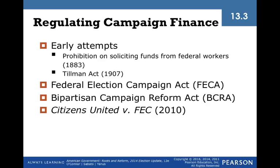Early attempts to regulate campaign finance included a prohibition on soliciting funds from federal workers, passed in 1883 as part of civil service reforms in the Pendleton Act, and then the Tillman Act of 1907, which prohibited corporations from making direct contributions to candidates for federal office. The first serious legislation came in the 1970s. In 1974, the Federal Election Campaign Act was passed, which created a program to provide public funding for presidential candidates and created the Federal Election Commission — the FEC — to enforce federal election campaign finance laws.